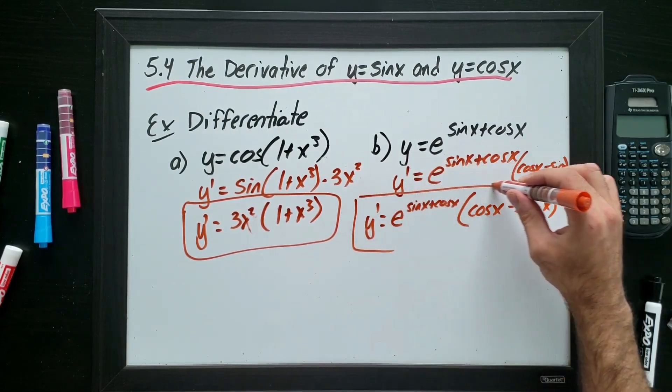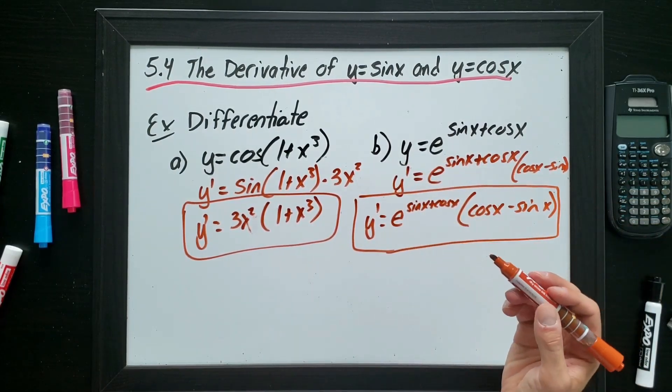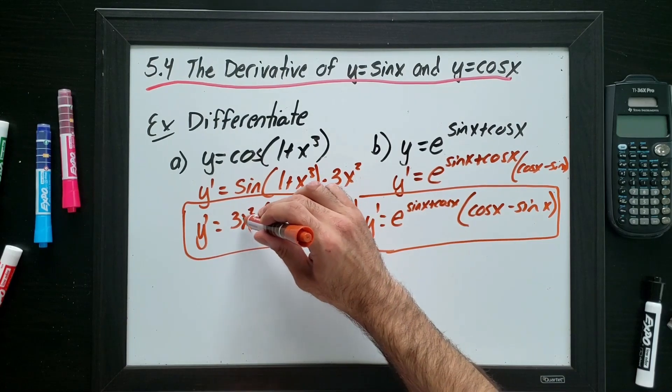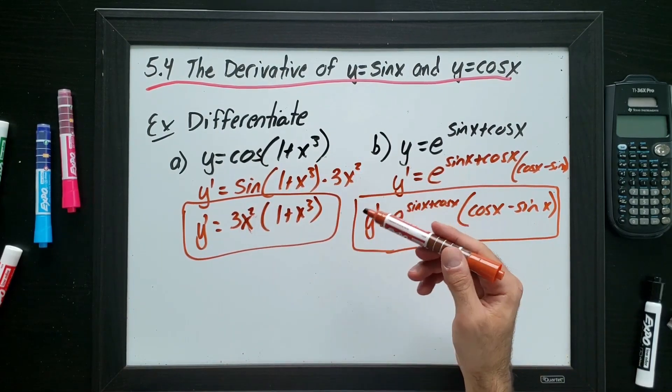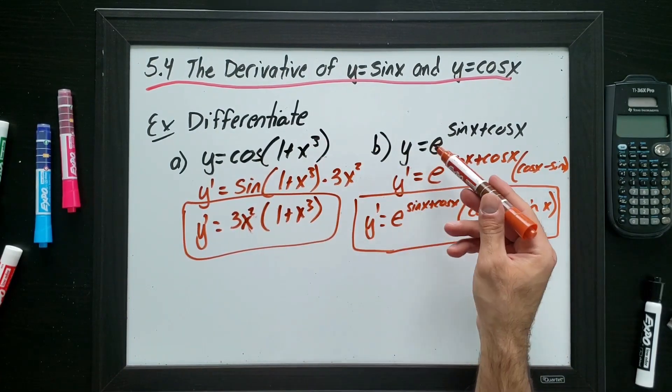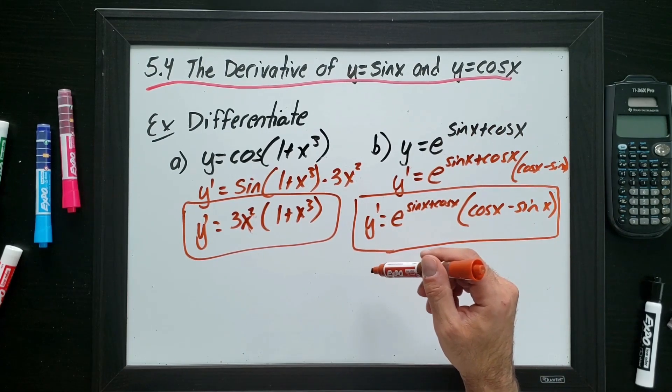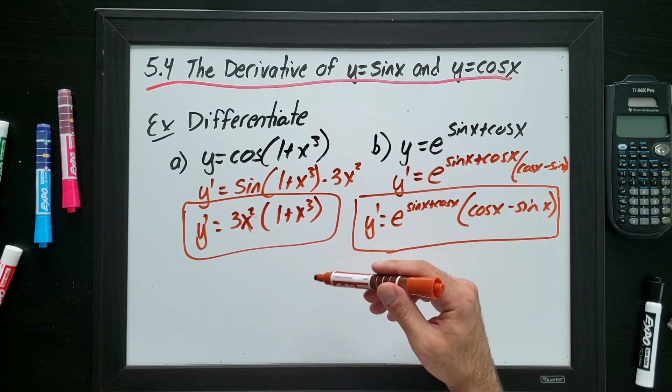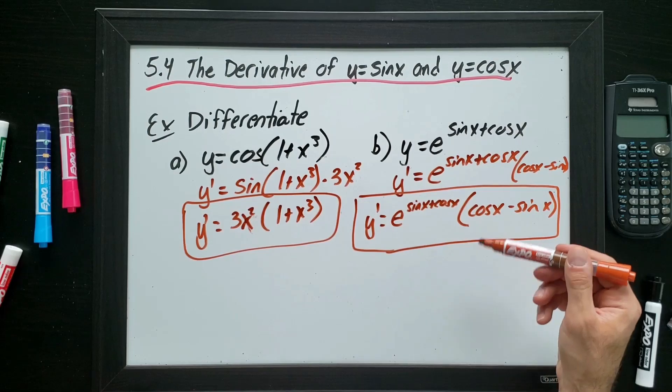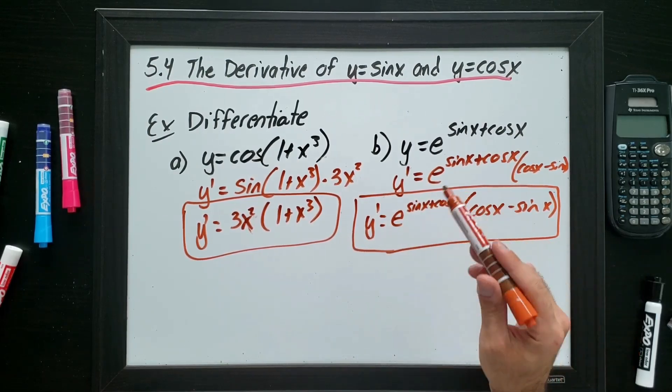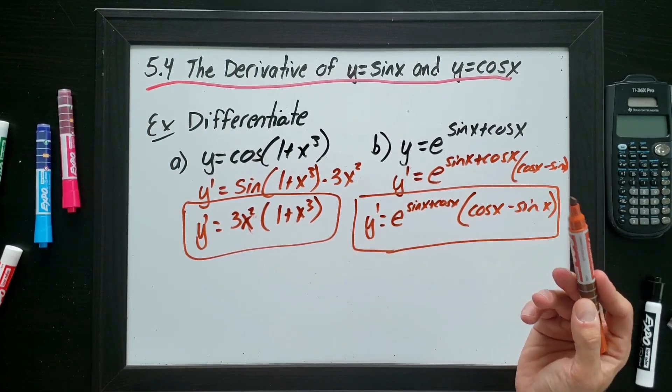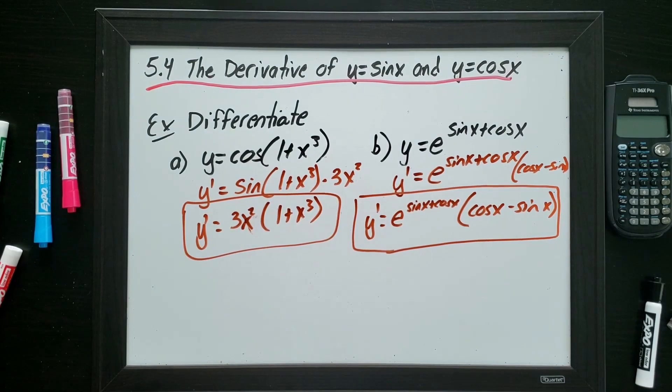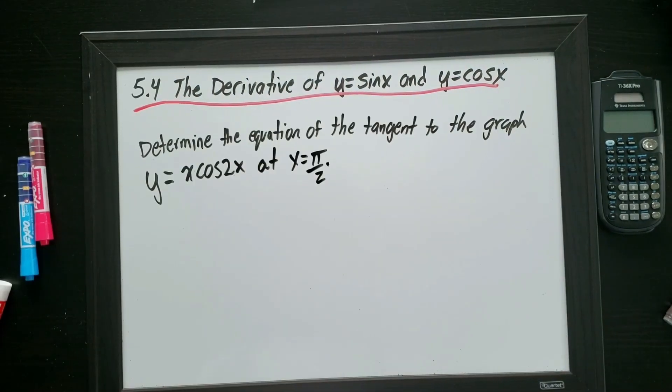Okay. So these are pretty straightforward. I mean, we know how to do derivative from previous chapters. The only thing we're adding here is sine and cos and, you know, Euler's number or exponential functions. So they're just new skills. But the process of finding the derivative, especially that chain rule, is the same throughout every chapter pretty much.